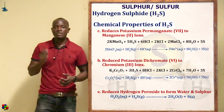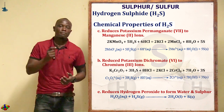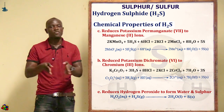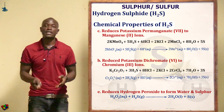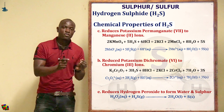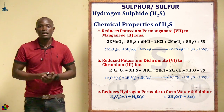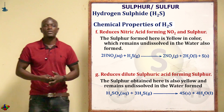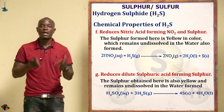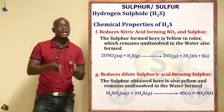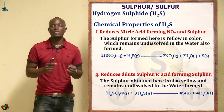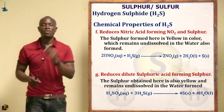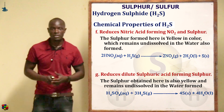It also reduces hydrogen peroxide to water, with the formation of a yellow solid of sulfur powder. Additionally, it reduces nitric acid to nitrogen dioxide gas, which is brown in color, and also forms a yellow solid of sulfur — so brown fumes of NO₂ and yellow sulfur powder are produced.